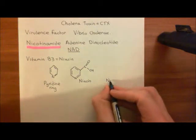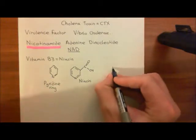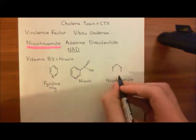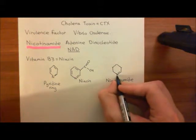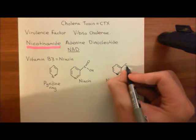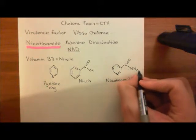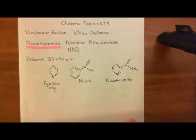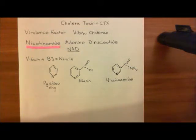Nicotinamide adenine dinucleotide contains nicotinamide, and then two ribosugars, one of which will have an ADP molecule bound to it. The structure of NAD has two ribosugars linked by two phosphate groups, with nicotinamide coming off the top ribosugar and adenine coming off the other. Let's start with the structure of ribose — it has a pentameric five-membered ring with oxygen at the top and four carbons, with the fifth carbon coming off the side.